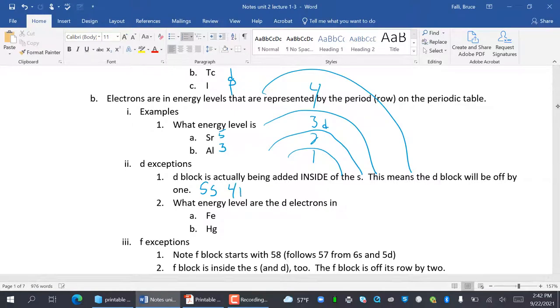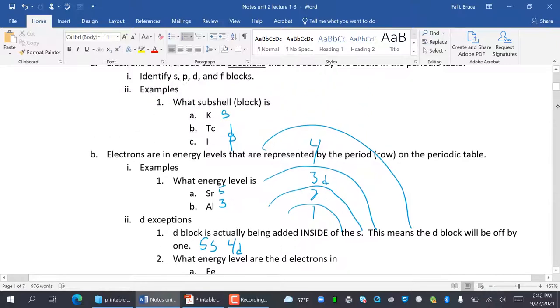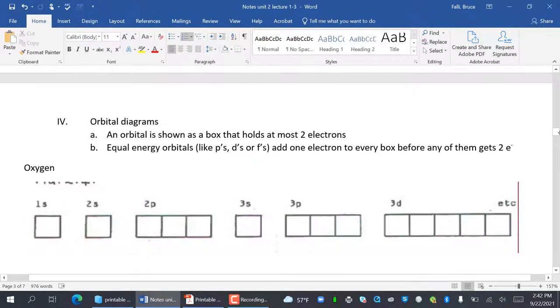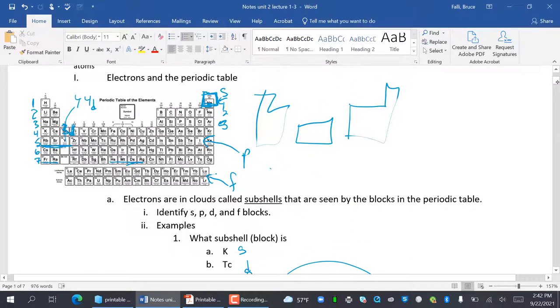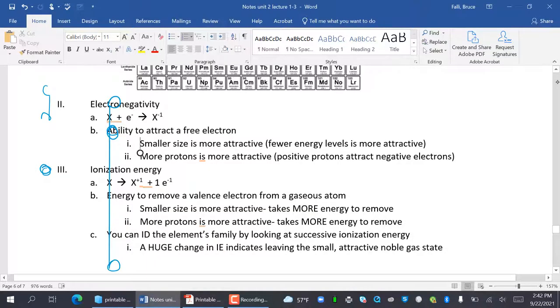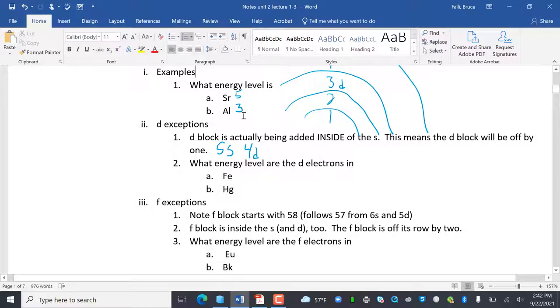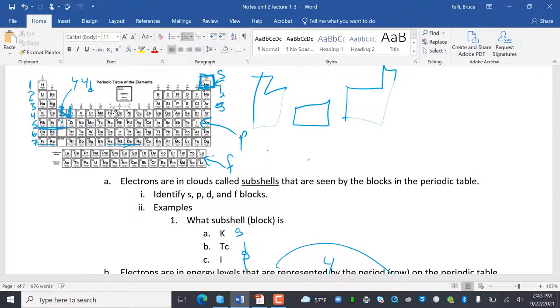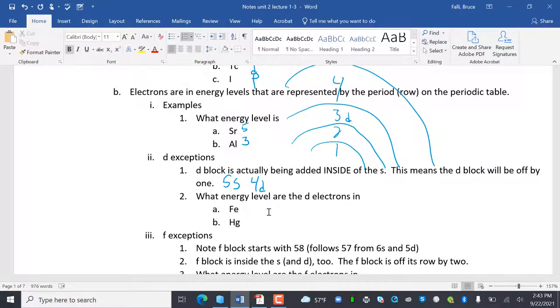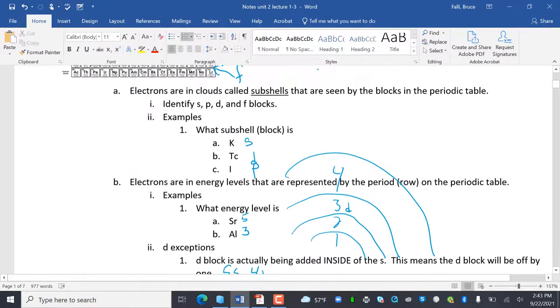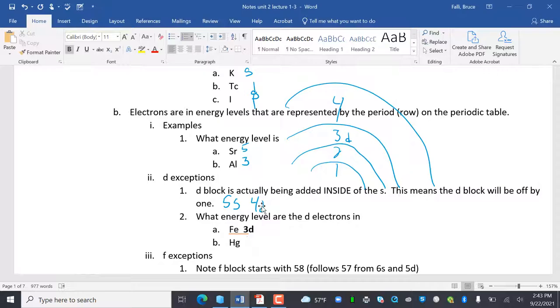So what energy level are the D electrons in for iron? Fe is right here, which is the fourth energy level, but adjust it to be 3 for the D. So iron is 3D. And mercury is right here. So that looks like the sixth, but remember, we've got to adjust it. So it's going to be 5D.